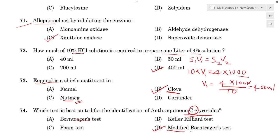For anthraquinone C-glycosides, we need stronger conditions. We can add ferric chloride to identify the C-glycoside using modified Borntrager's test.